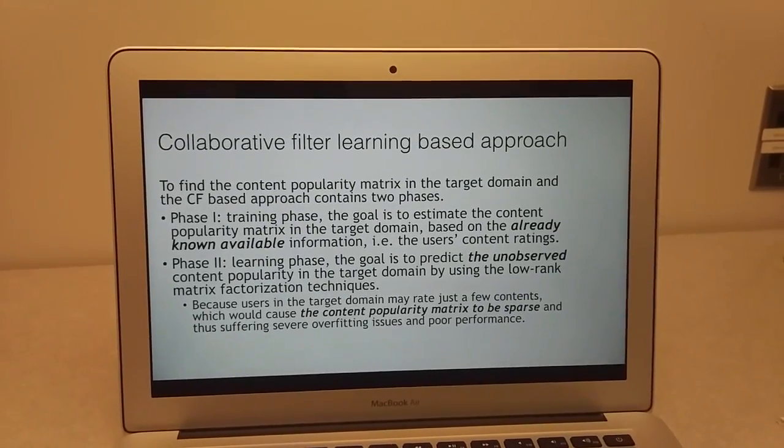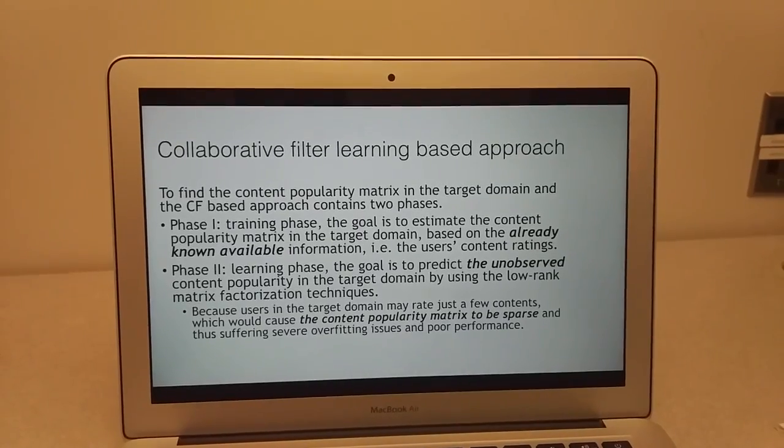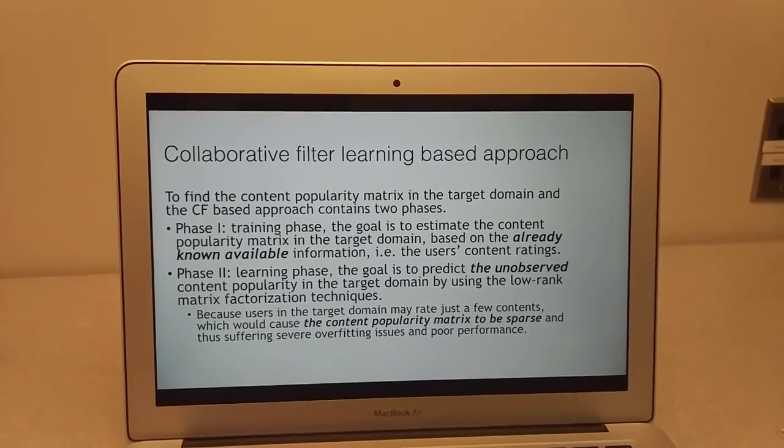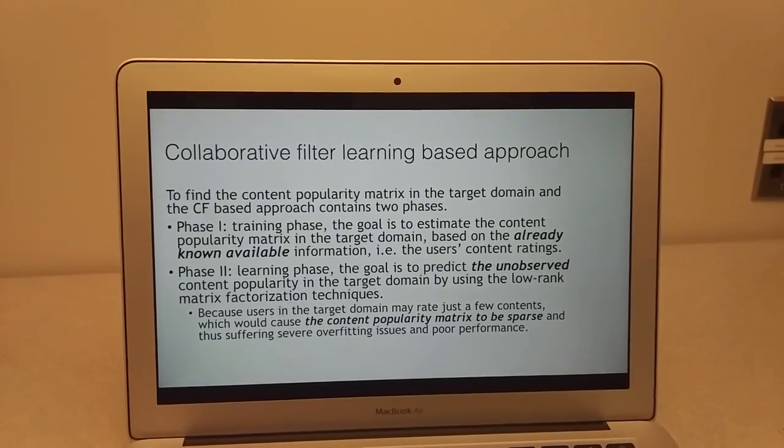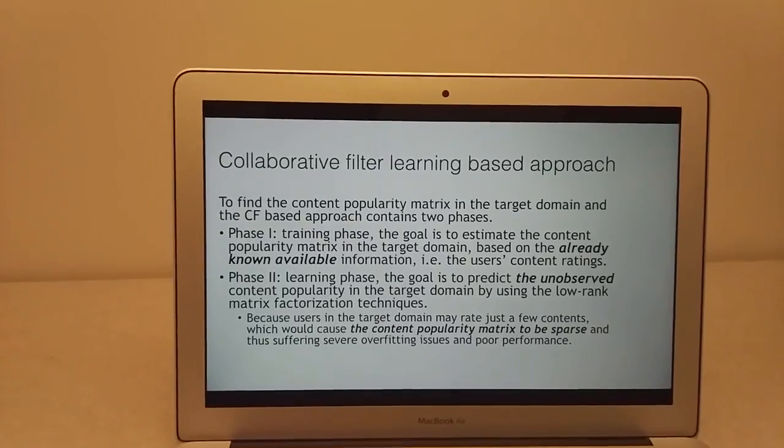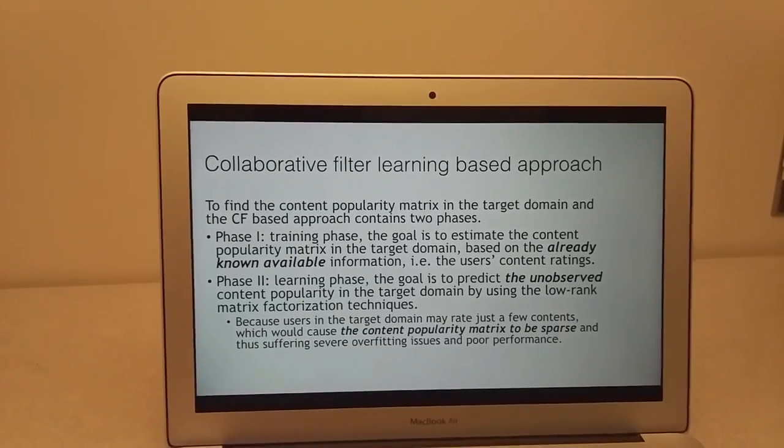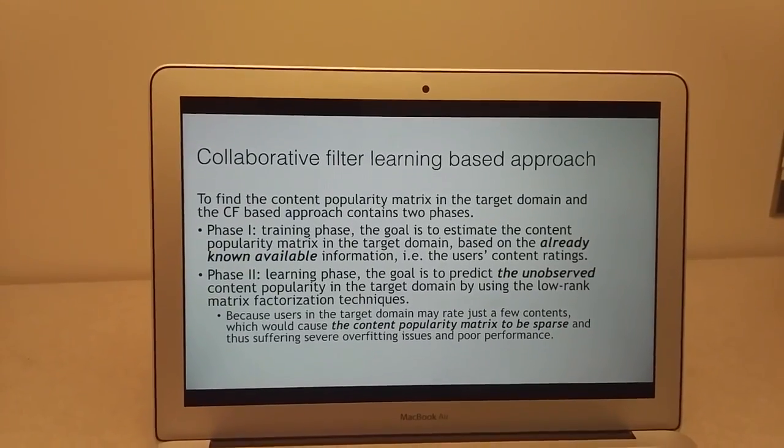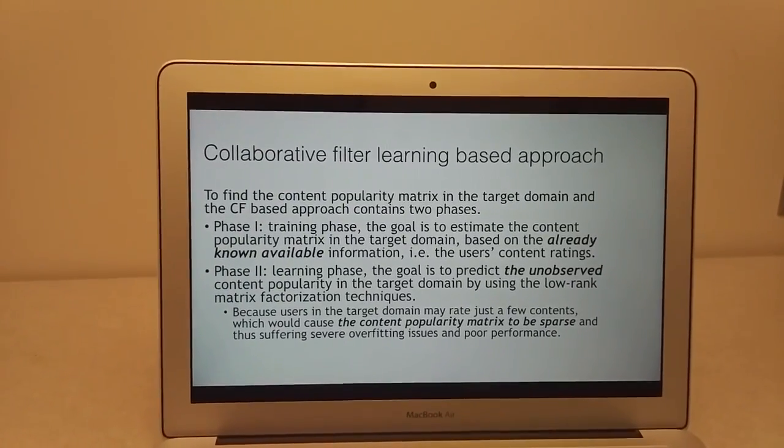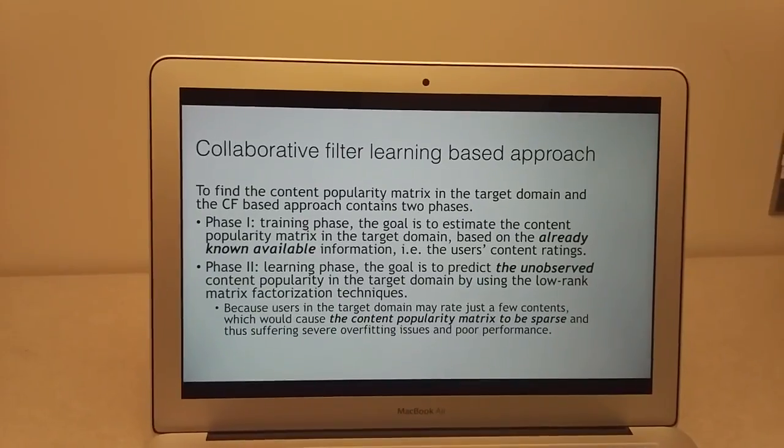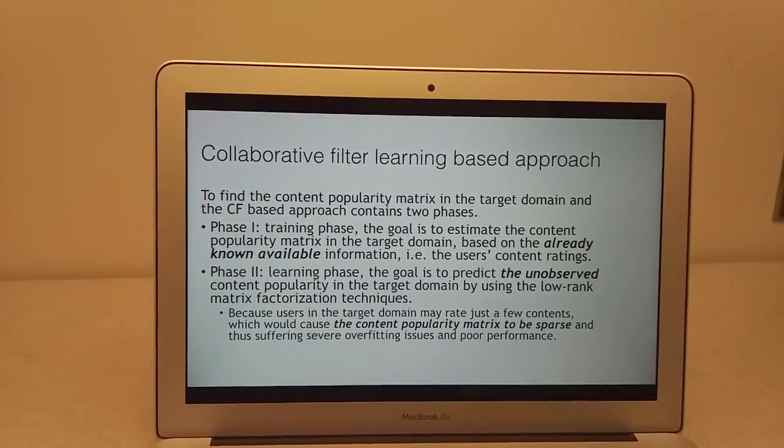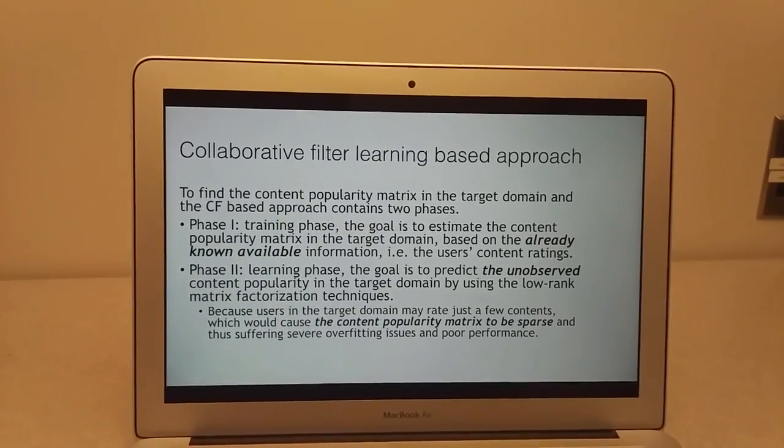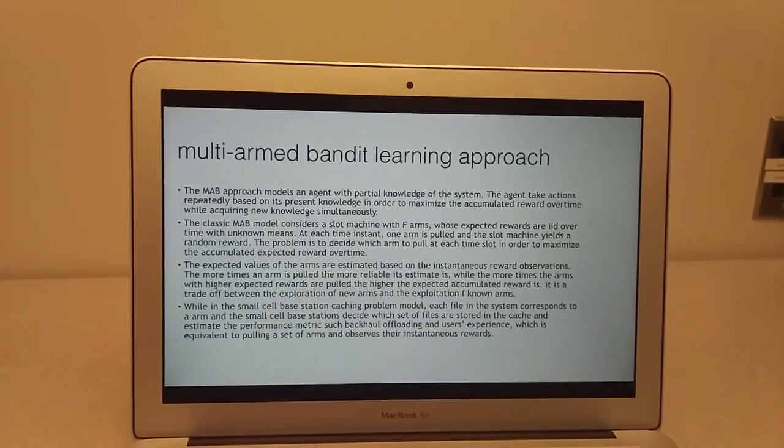In phase two, the goal is to predict and observe the content popularity in the target domain by using low-rank matrix factorization techniques. But one problem is that because users in the target domain may read just a few contents, the content popularity matrix can be sparse, thus suffering severe overfitting issues and poor performance.